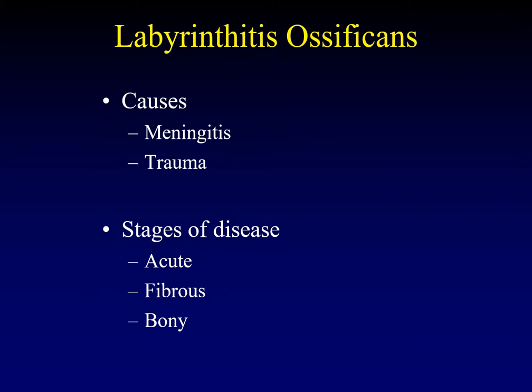So what is labyrinthitis ossificans? Labyrinthitis ossificans is the end stage of any insult to the labyrinth. The most common causes are meningitis and trauma — and if you allow that surgery is a form of trauma, probably the most common cause is surgery. This is an inexorable, progressive disease, but it evolves at a variable pace. Some people have rapid progression; some people have very slow progression.